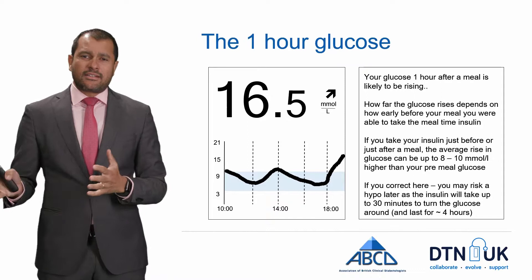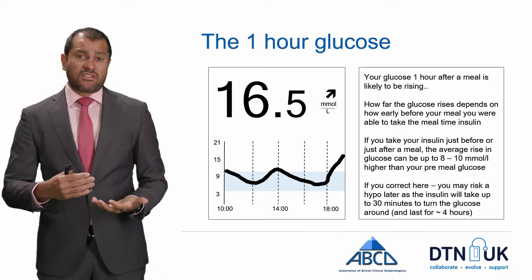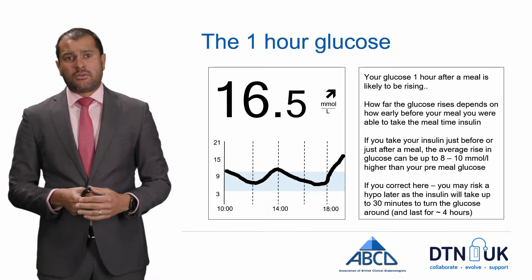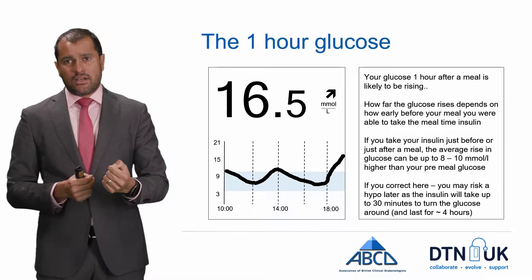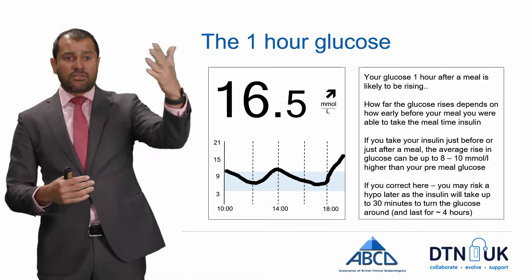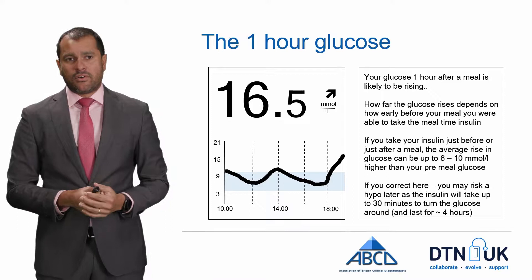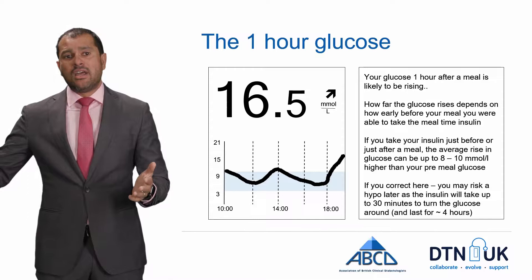A key time post-meal is the one-hour glucose — that's generally when blood glucose is highest after a meal. If you take rapid-acting insulin just before or just after a meal, the average rise of glucose is between 8 to 10 mmol per litre higher than where you started. So if you started at 6, an hour later the blood glucose could be 16.5. If you see that high reading and want to correct, remember the insulin will only start really working half an hour later, and you may risk hypoglycaemia later on.